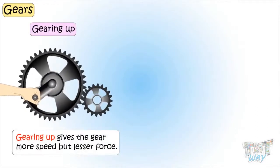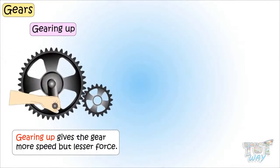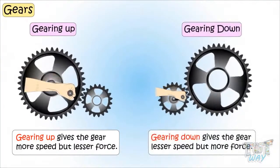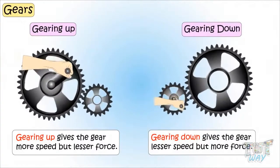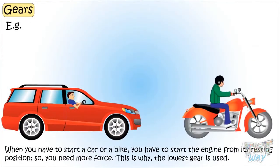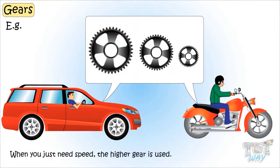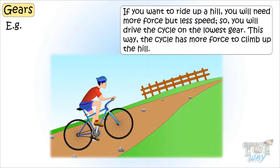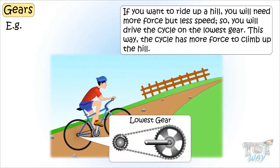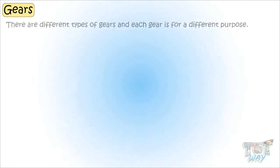Gearing up gives the gear more speed but lesser force, and gearing down gives the gear less speed but more force. This is why when you start a car or any bike from a standstill, you need more force, so the lowest gear is used. When you just need speed, the higher gear is used. For example, if you want to ride up a hill, you need more force but less speed, so you ride the cycle on the lowest gear so it has more force to climb up the hill.